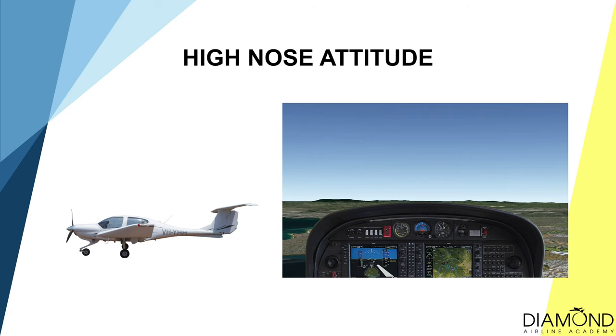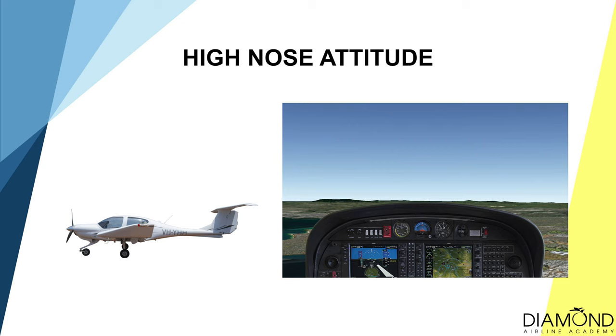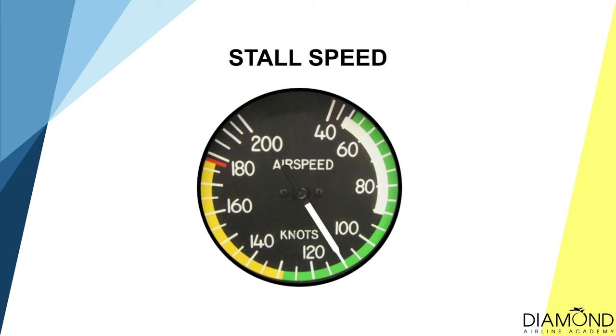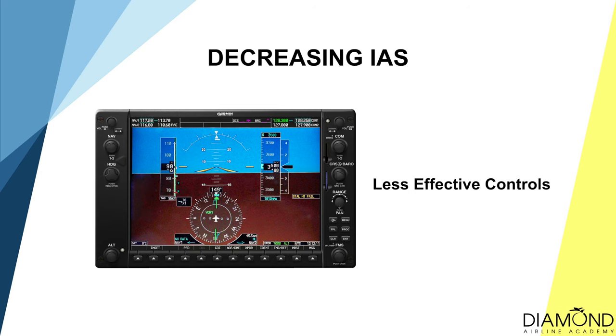When approaching a stall, there are symptoms that allow us to recognise it and avoid entering the stall. The first symptom is the aircraft's nose attitude — as we get close to the stall, the nose attitude gets higher and so does the angle of attack. Because of the increasingly high nose attitude, airspeed decreases rapidly, getting closer to the stall speed. Due to the reduction in airspeed, control effectiveness is reduced — the controls may feel lighter and sloppier than usual.